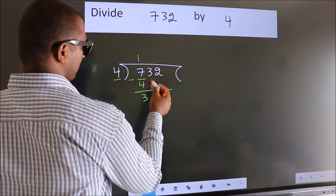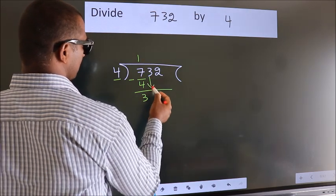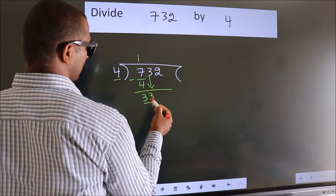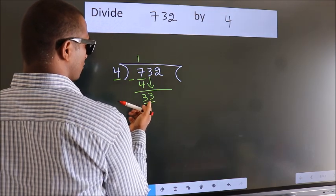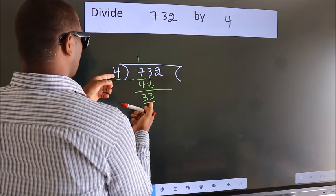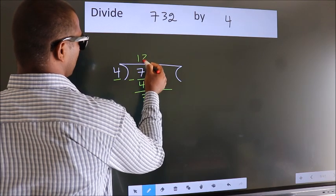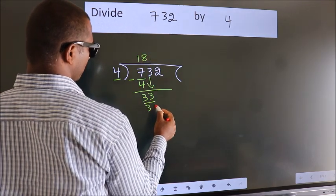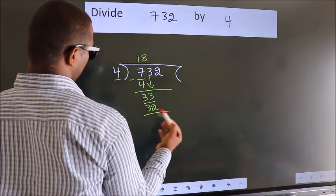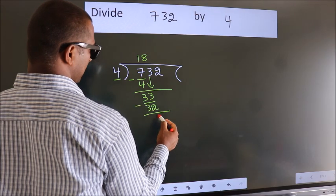After this, bring down the beside number. So 3 down. So 33. A number close to 33 in 4 table is 4 times 8 is 32. Now we subtract. We get 1.